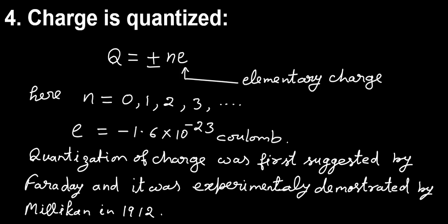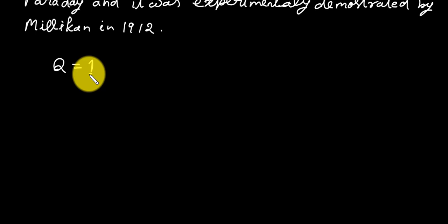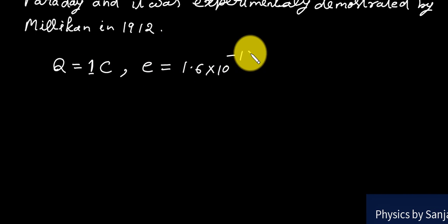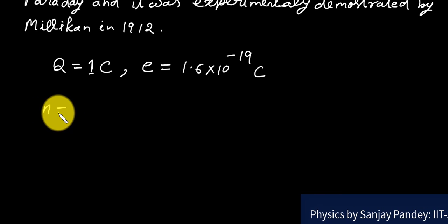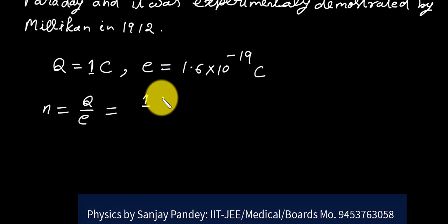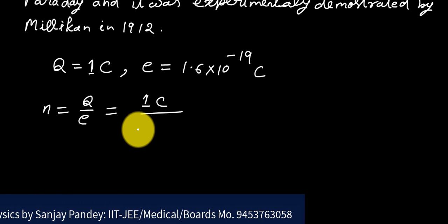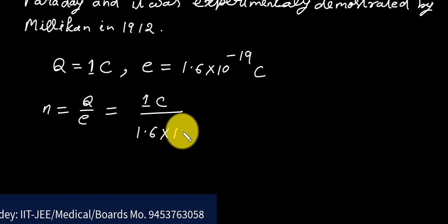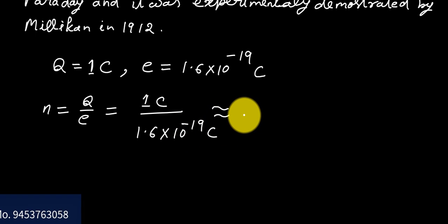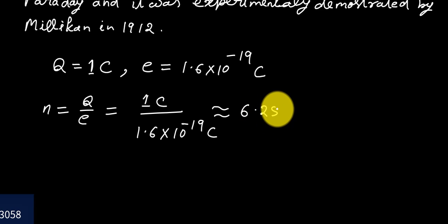We can also calculate the number of electrons in 1 Coulomb charge. For it, just put Q = 1 Coulomb and e = -1.6 × 10^-19 Coulomb. This value will be equal to 6.25 × 10^18. It is a very large number.